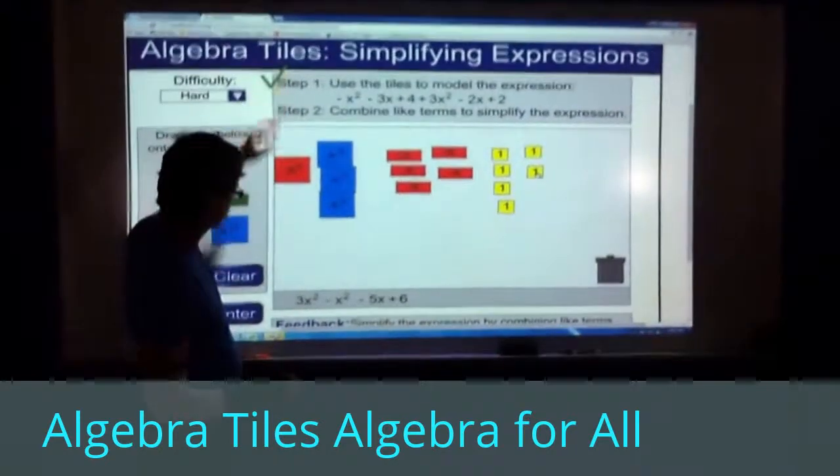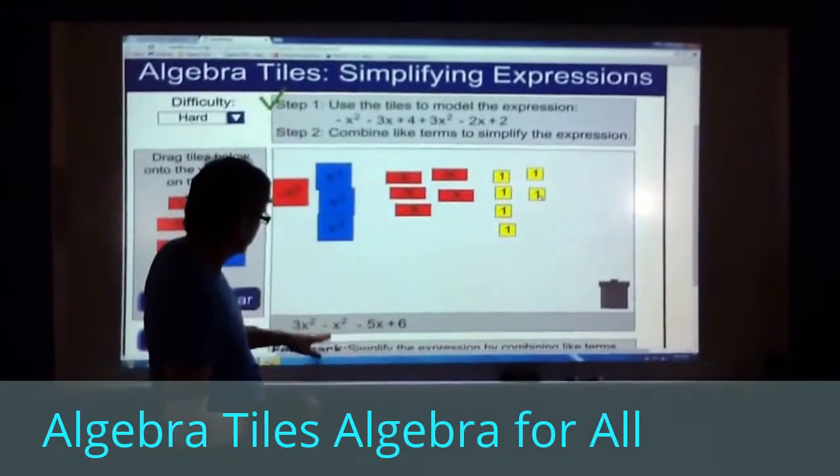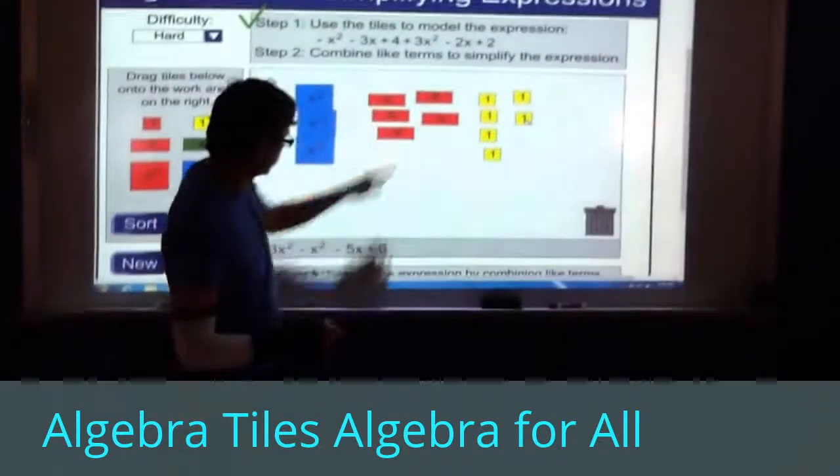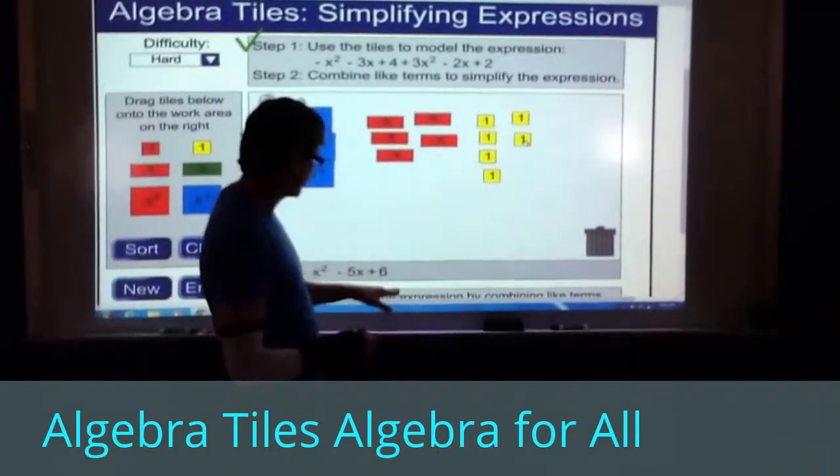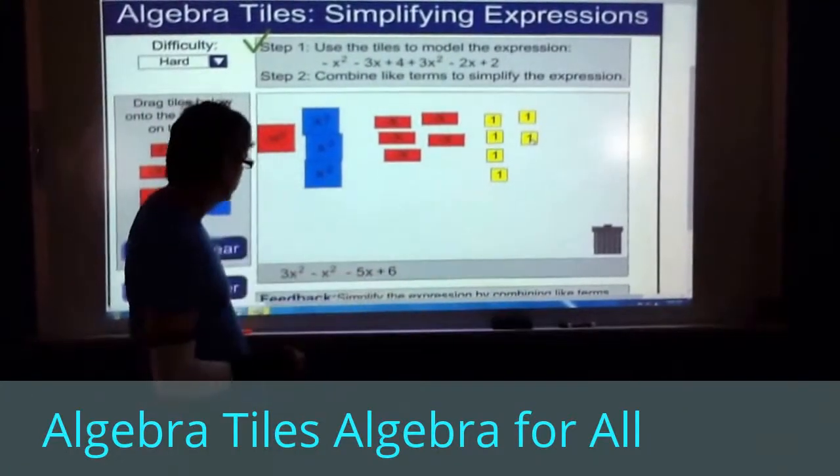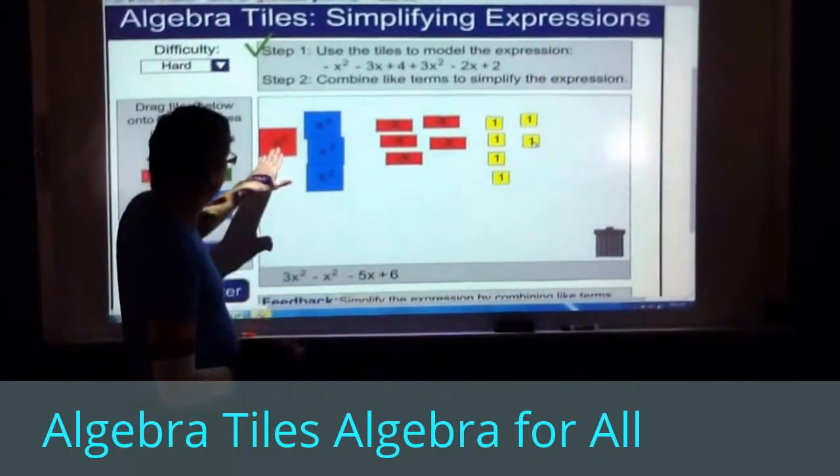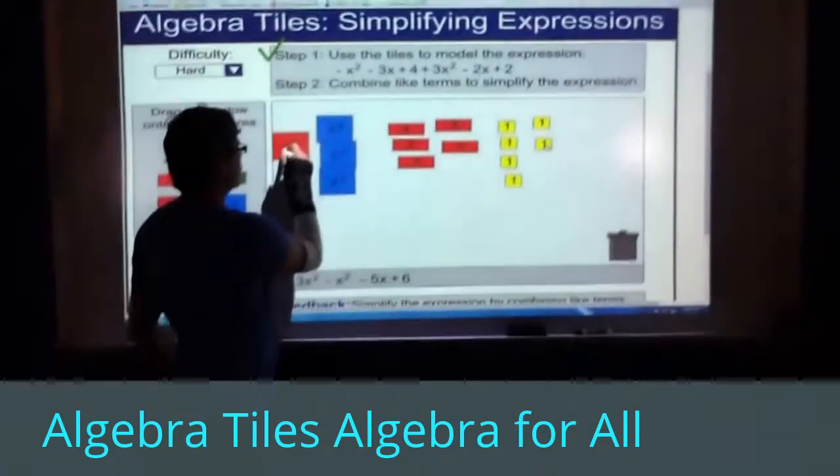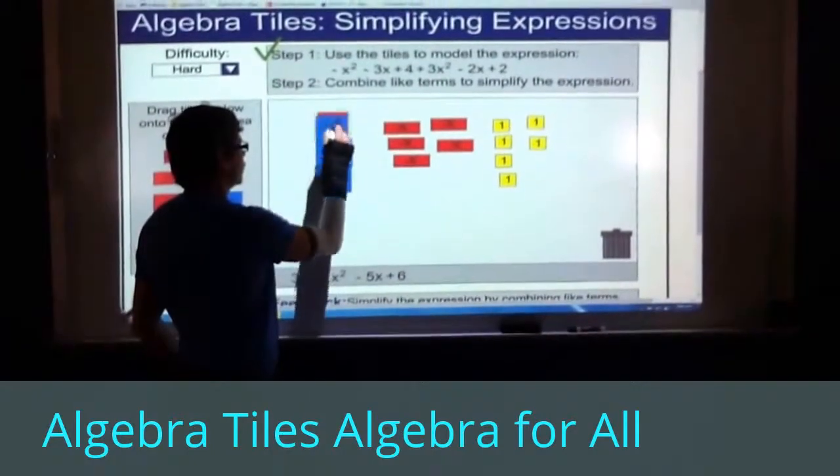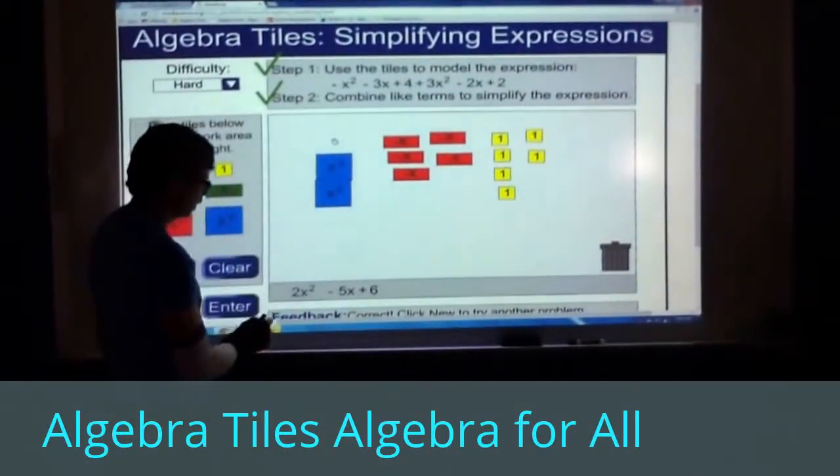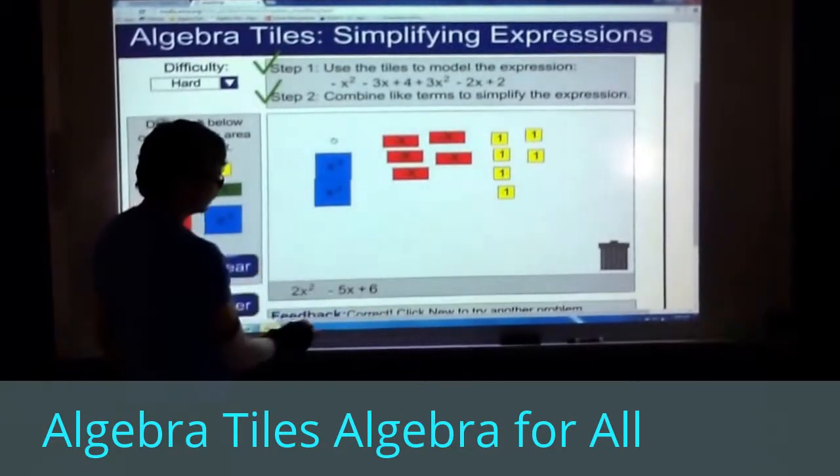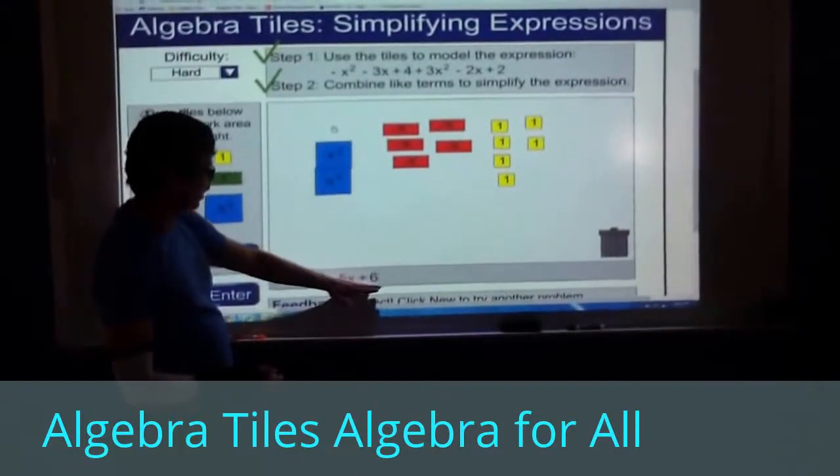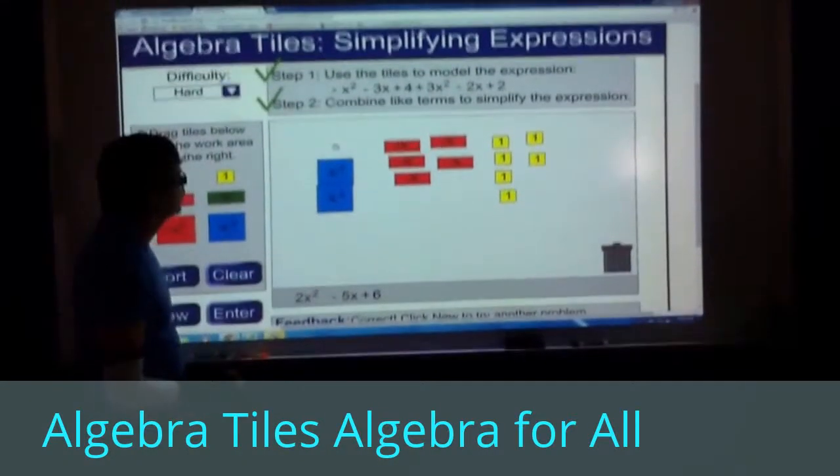We have 5 negative x's, where they write that as negative 5x, and we have 6 ones. I'm already seeing 6 ones down here. A negative x squared and a positive x squared is a zero pair. Those should go together and zero each other out. Now I'm left with 2x squared, 5 negative x's, and a 6. So we can write that as 2x squared, negative 5x, and 6. That would be our answer to that problem.